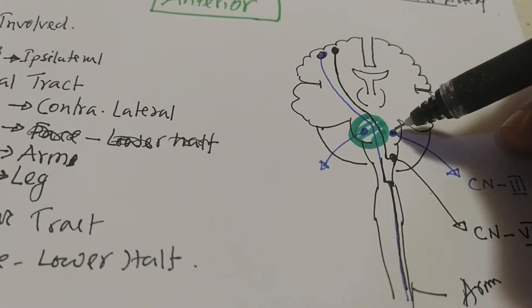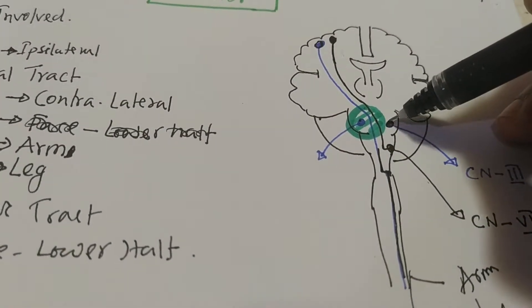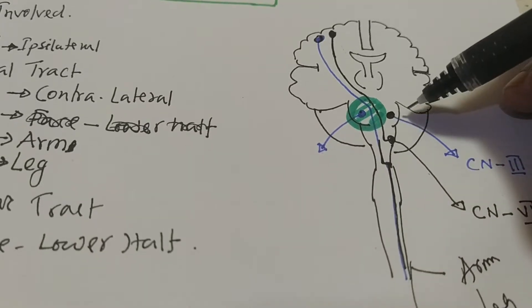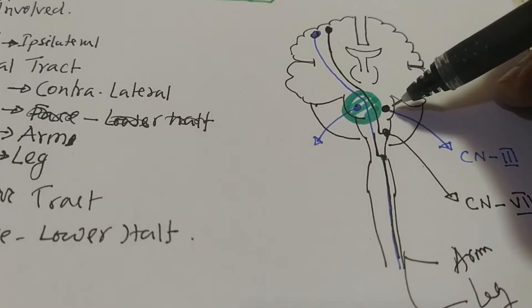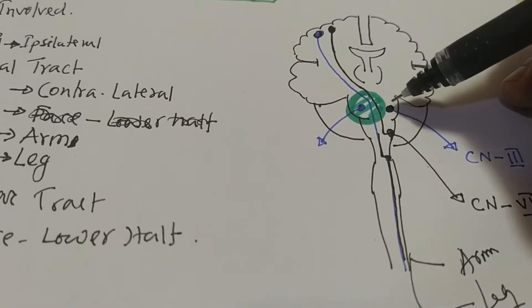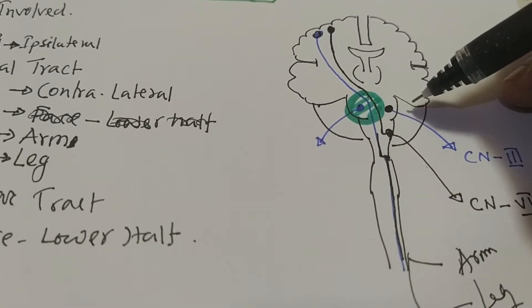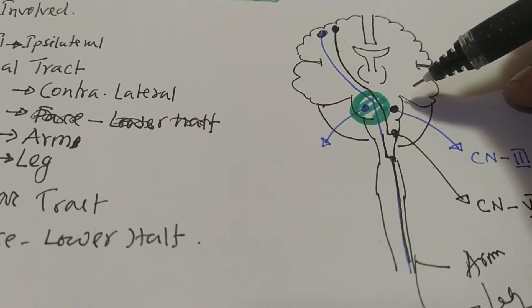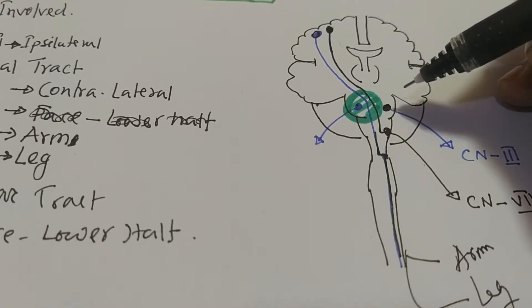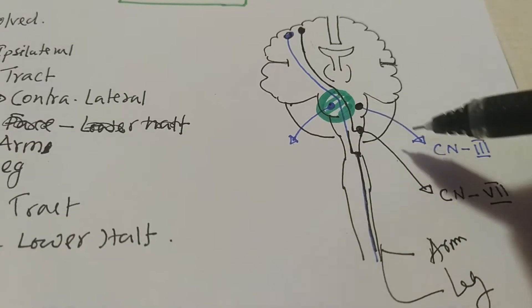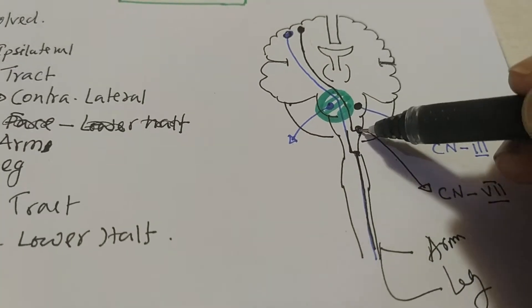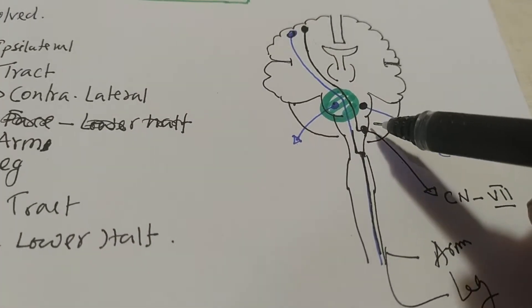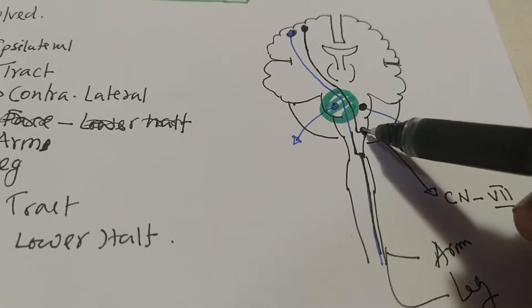The nucleus of the third cranial nerve emerges from the midbrain, and the nucleus of the seventh cranial nerve is located in the lower pons.